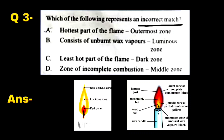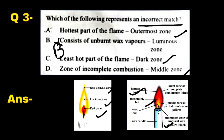Looking at the flame zones: the outermost part is the non-luminous zone and is the hottest part. The middle zone is the luminous zone. The innermost part is the dark zone, which is the least hot. The unburnt wax vapors are found in the dark inner zone, not the luminous zone. So option B is the incorrect match and is the correct answer.